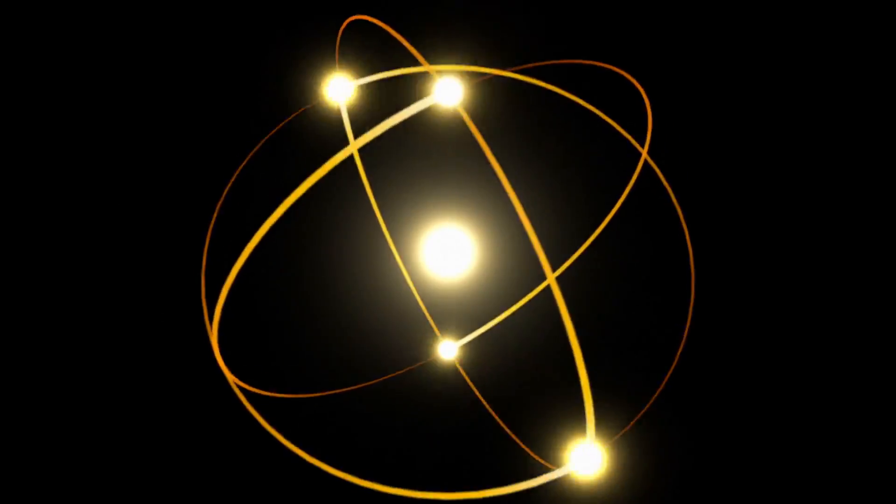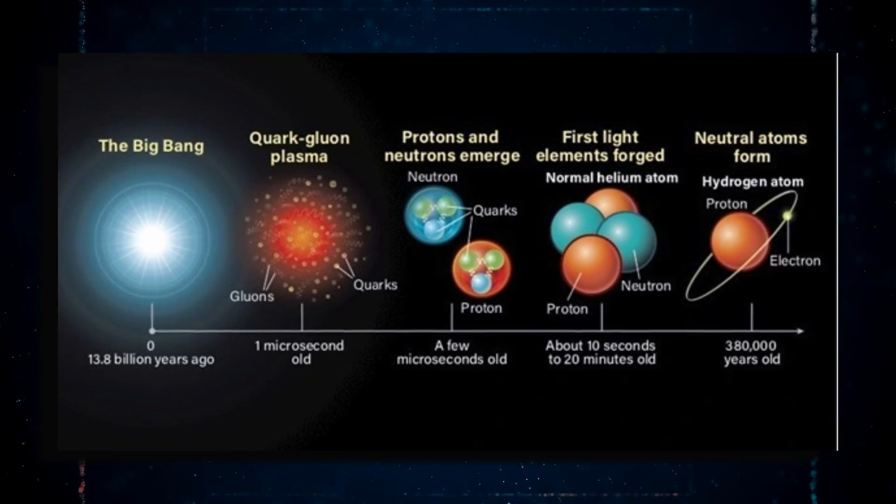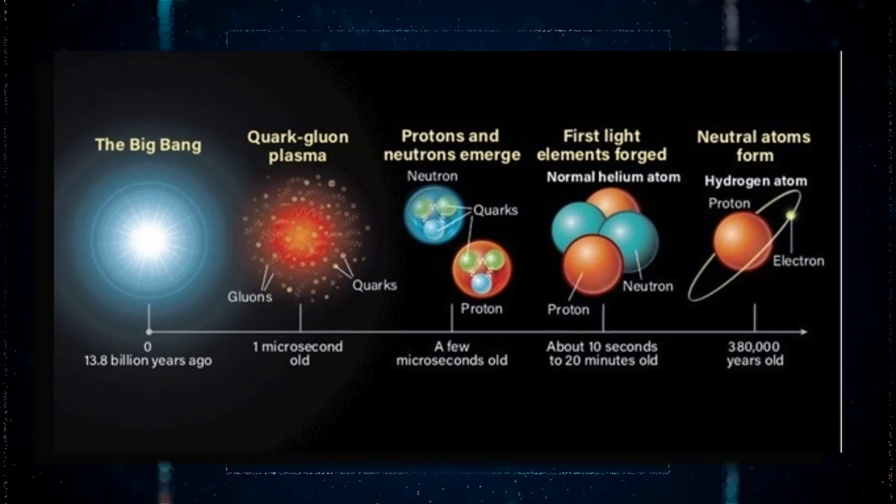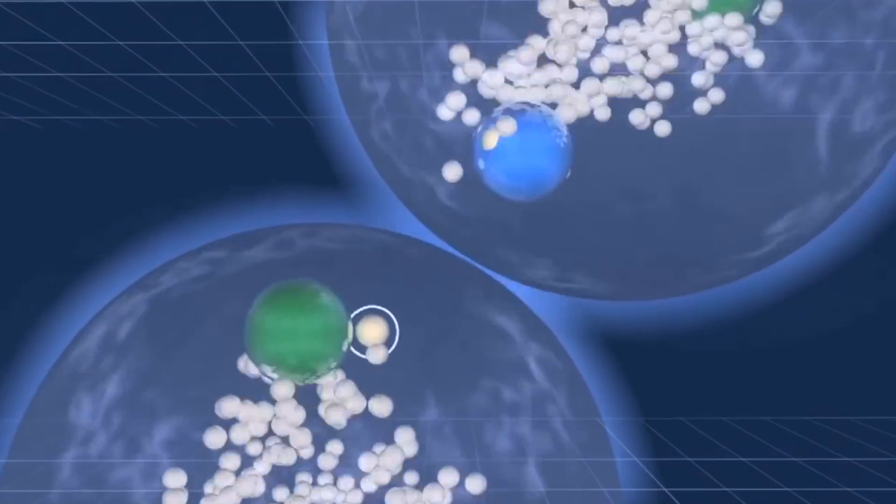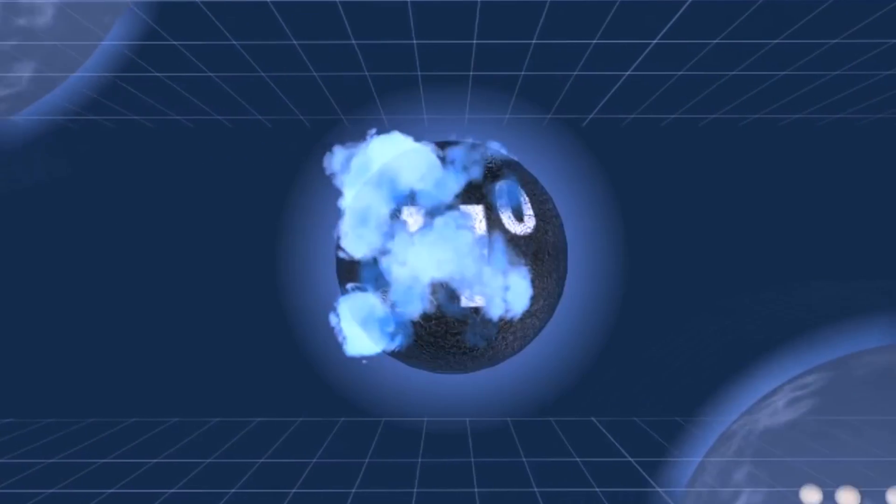This theory extends the Standard Model and suggests that when elementary particles, such as photons or electrons, emerged during the universe's early stages, they were accompanied by matching superparticles. According to the theory, each particle in the Standard Model has a partner particle with a different spin.